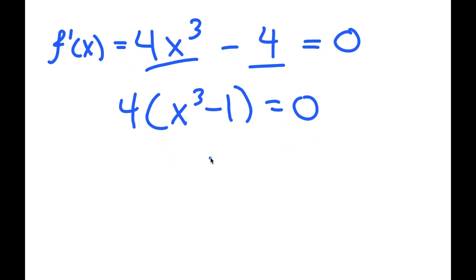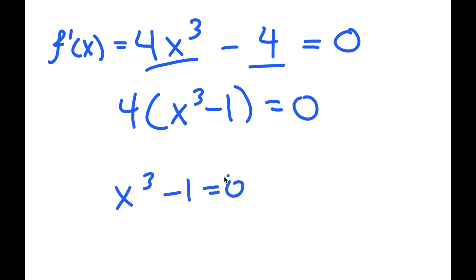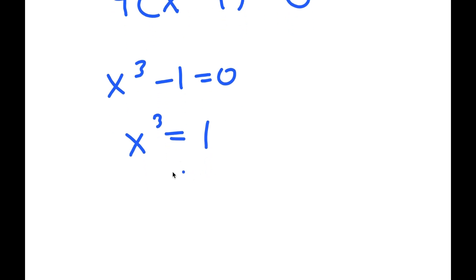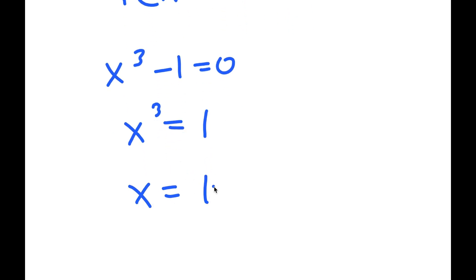And this means that I have x to the power of 3 minus 1 equals 0, meaning x to the power of 3 is equal to 1, and x is equal to 1.